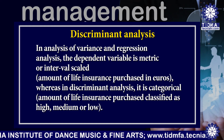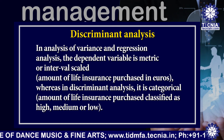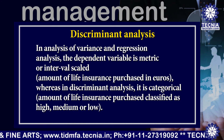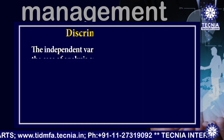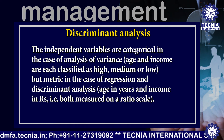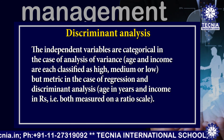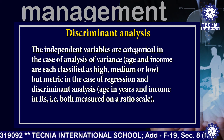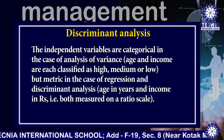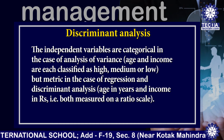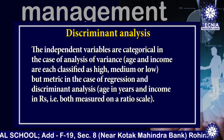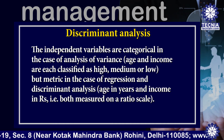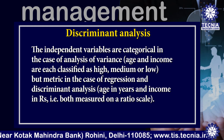Whereas in discriminant analysis, the dependent variable is categorical — that means the amount of life insurance purchased is classified as high, medium, or low. The independent variables are categorical in the case of analysis of variance, where age and income are each classified as high, medium, or low. But they are metric in the case of regression and discriminant analysis — age in years and income in rupees — both measured on a ratio scale.